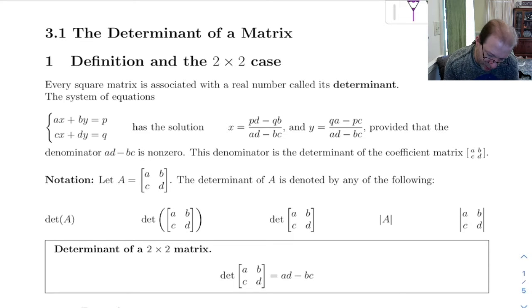Now a determinant is a real number that's associated with a square matrix, and the thing we really care about is if the determinant is non-zero then the system of equations associated with it is going to have a unique solution.